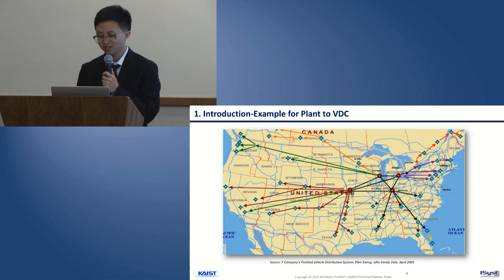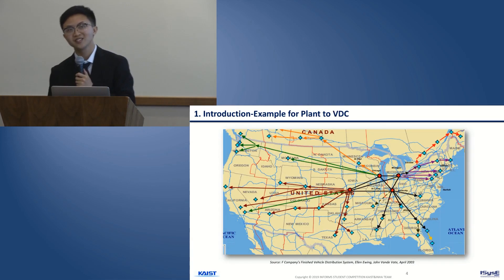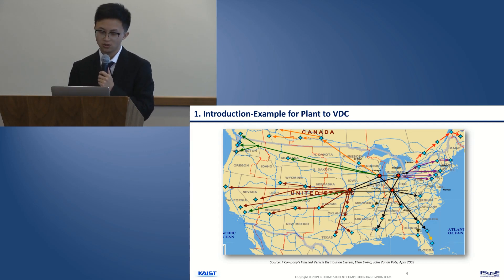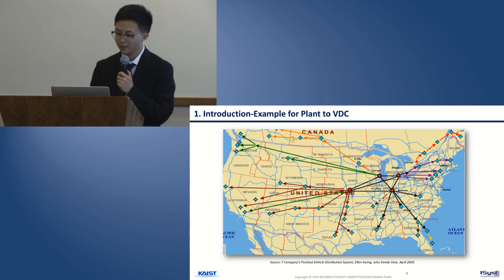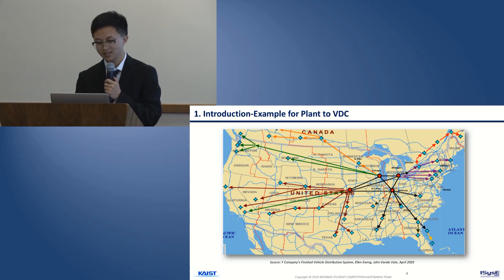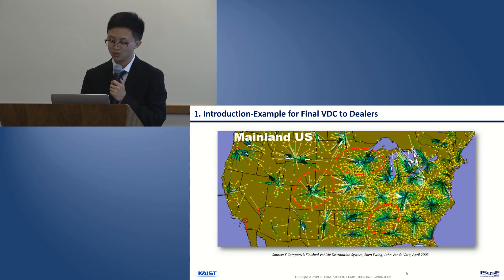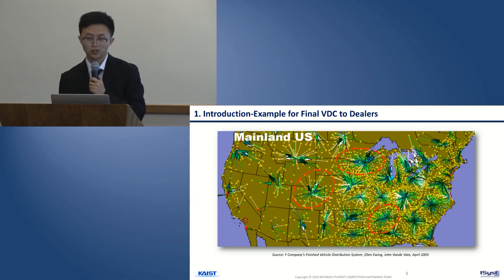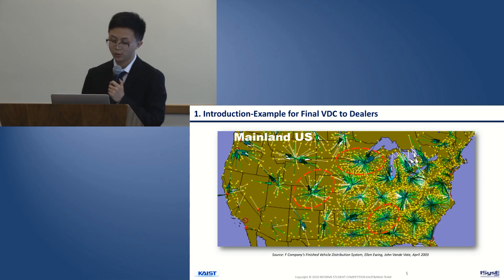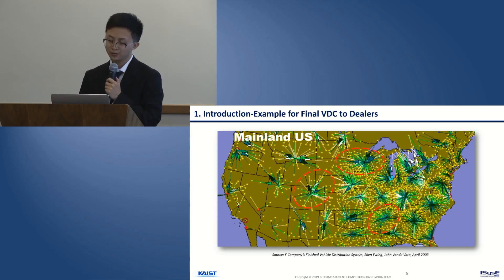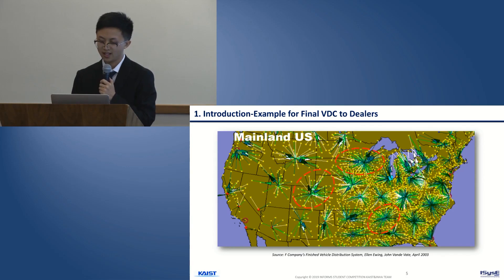As the data given by GM has been desensitized, the locations of all the plants, VDCs, and dealers are not clear. To have a better understanding about this problem, we found an example to share here. This figure gives us the network between the plants and VDCs, and it even somehow follows the distribution of the railway network in the US mainland. And this other figure gives us the network between VDCs and dealers. It's very obvious that geographic groups of dealers are assigned to corresponding VDCs, giving us an intuitive feeling about the vehicle delivery process and ideas for designing our model.